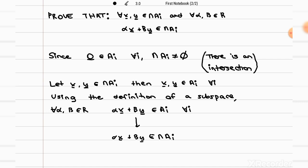By proving that every linear combination is in the intersection, that proves that the intersection is also a subspace.